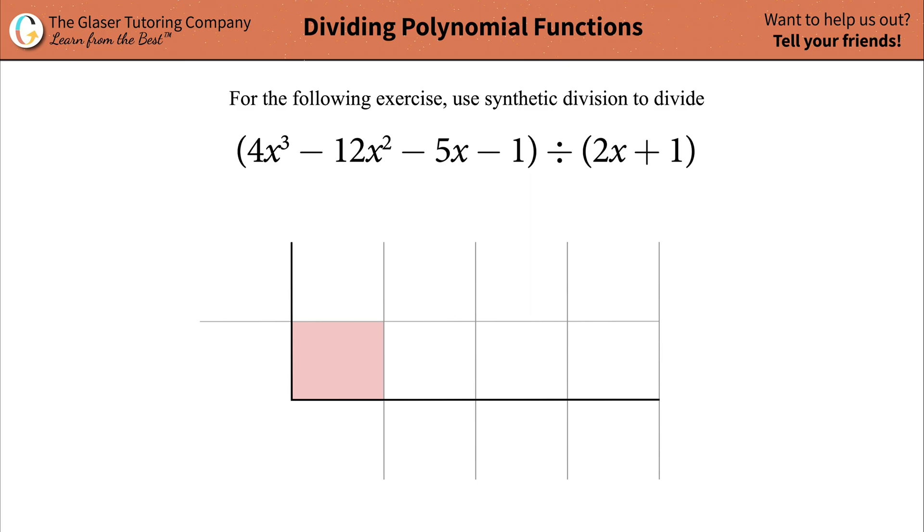Yo, Andrew here. Today I would like to teach you how to use synthetic division to divide and find the answer to the following problem of 4x cubed minus 12x squared minus 5x minus 1, which is then being divided by 2x plus 1. All right, so how do we approach this?